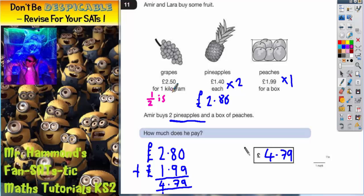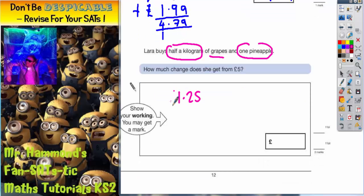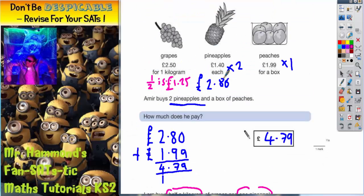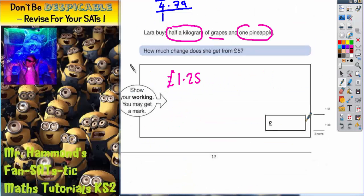Half of 50p is 25p and half of £2 is £1. So it's going to be £1.25. So half a kilogram of grapes is £1.25. And she has one pineapple. One pineapple is £1.40. Now before we can work out the change from £5. We need to work out how much this is altogether. How much she's actually spending. So we need to add in a column method. 5 add 0 is 5. 2 add 4 is 6. 1 add 1 is 2. So she's spending £2.65.